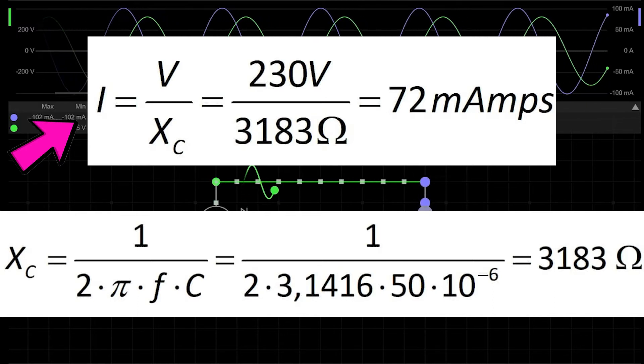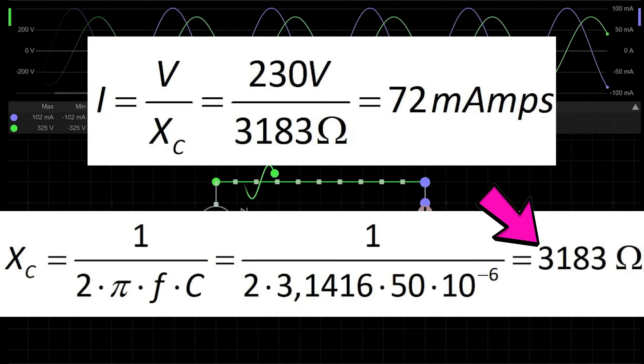Using Ohm's law, we divide voltage 230V by the reactance of our capacitor. Reactance will be equal to 3183 ohms, and using such a simple equation, current will be equal to 72 milliamps.